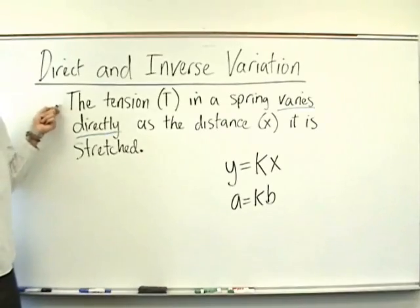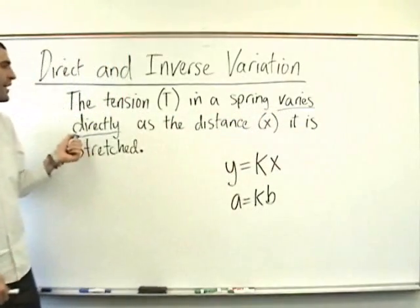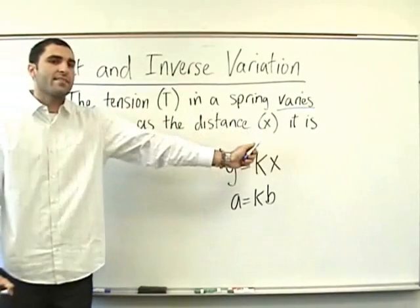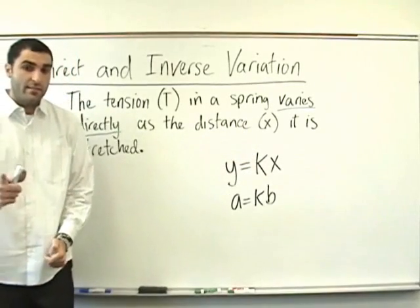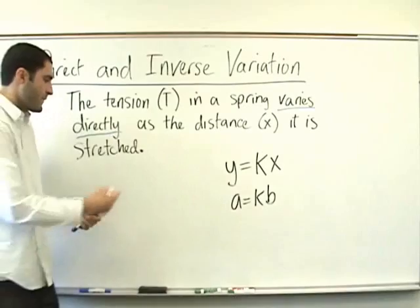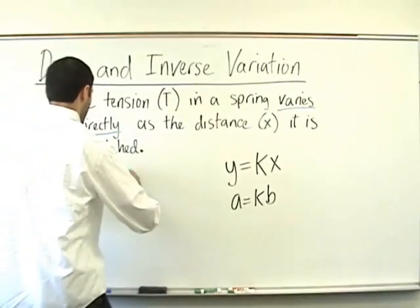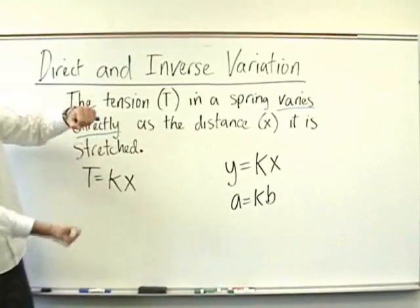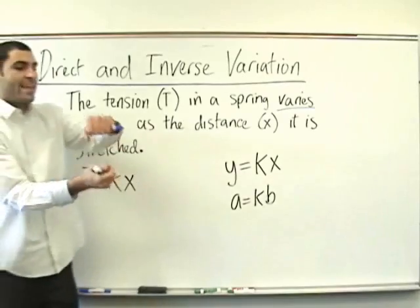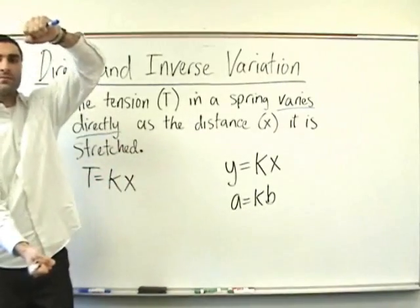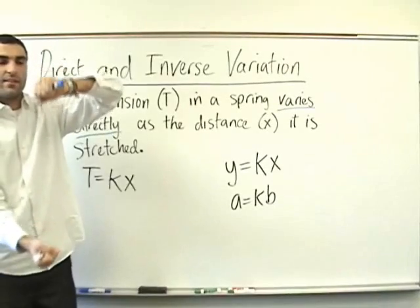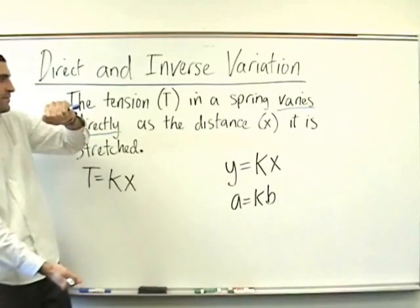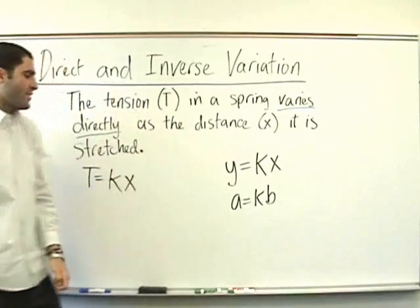It says, the tension T in a spring varies directly as the distance x it is stretched. So, t varies directly as x. So, t equals kx. So, let's think about a spring. Would you agree that the tension in the spring is more when you stretch it more? The tension is more when you pull it. So, that's what it means. It varies directly. The more you stretch it, the more tension. The more distance, the more tension.